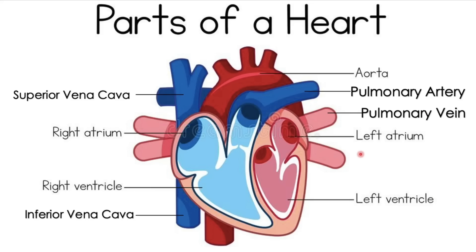Now, let us have the parts of the heart. Deoxygenated blood enters through the superior and inferior vena cava. If you know the difference between superior and inferior vena cava, comment down below. Blood will be received by the right atrium, passed through the tricuspid valve, and pumped by the right ventricle, then passed through the pulmonary valve, and will exit to the pulmonary artery, going to the lungs to get oxygen. It will now become oxygenated blood and will enter the pulmonary vein, be received by the left atrium, passed through the bicuspid valve, and pumped by the left ventricle, then passed through the aortic valve, and will exit to the largest artery — the aorta — going to the rest of the body to deliver oxygen.